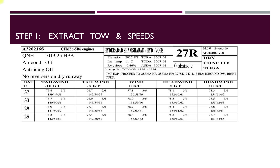The first step in the calculation is to extract the takeoff weight and the speeds. Here I have taken an extract of the chart. You can see that the rows are for the outside air temperature and the columns are for the different wind conditions. In our example we are getting tailwinds of 10 knots and the outside air temperature is 33 degrees. We narrow down to this box, looking at the column for tailwinds of 10 knots and the row for OAT of 33 degrees. This column presents three types of data: the weight in tons, the V speeds V1, VR and V2, and the limitation codes on the top right.